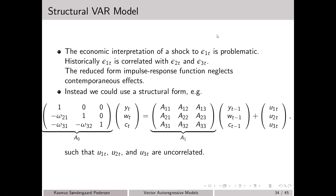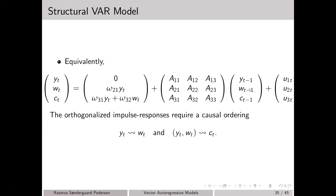Instead, we may write the model in structural form, identically to the ADL model seen in a previous video. In particular, we may have a trivariate system containing an income variable, a wealth variable, and a consumption variable. Pre-multiplying by a matrix A_0 implies that the new error terms u_1 to u_3 have a diagonal covariance matrix — meaning the errors are uncorrelated. This kind of model is denoted a structural VAR model, and it imposes some causal ordering.